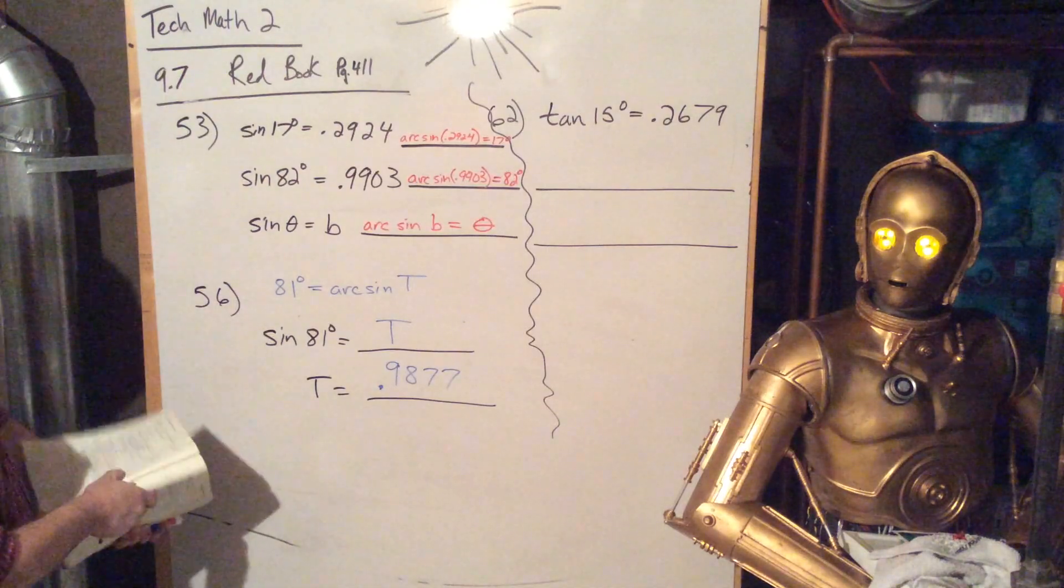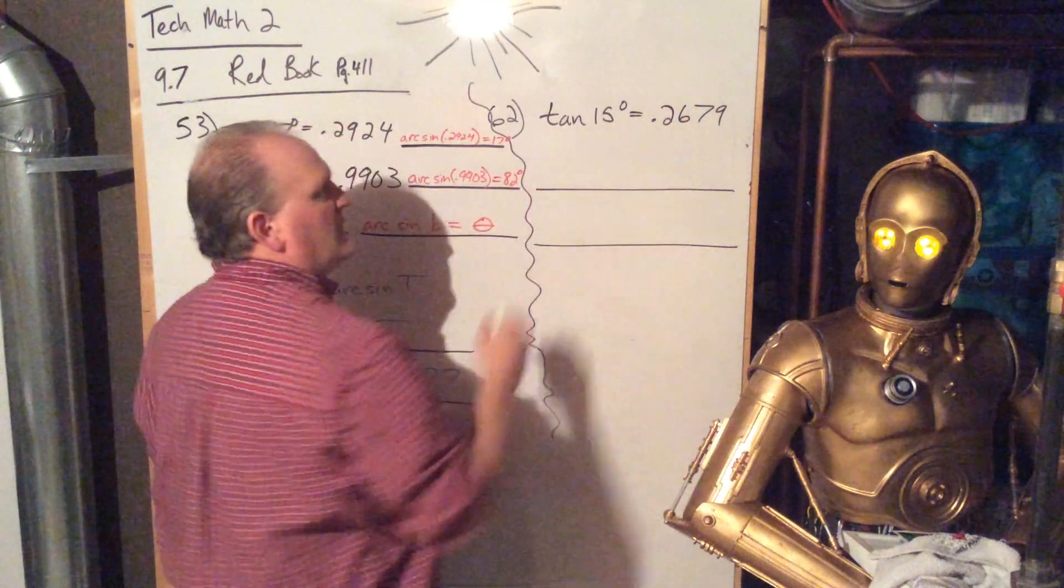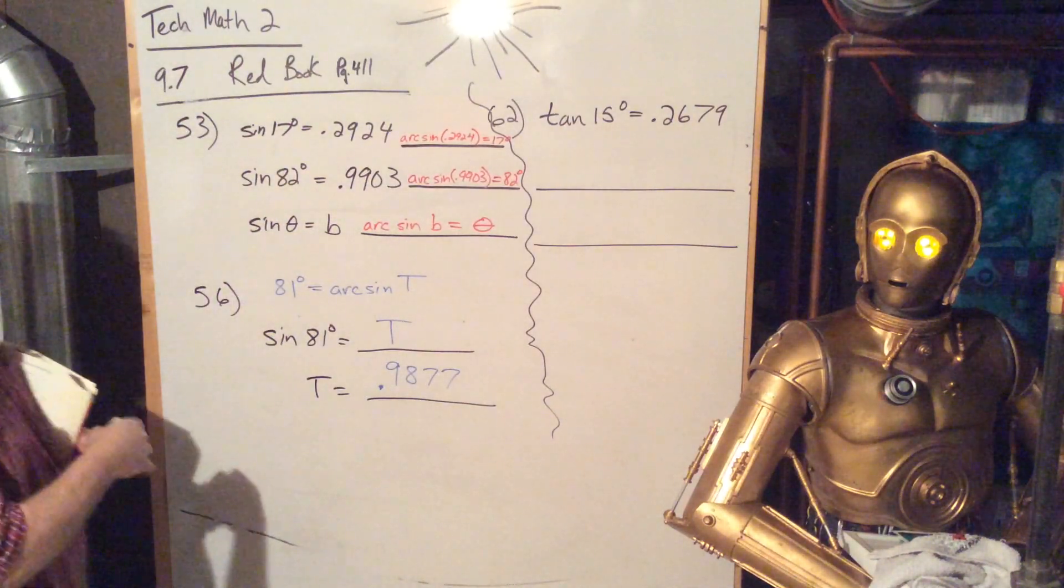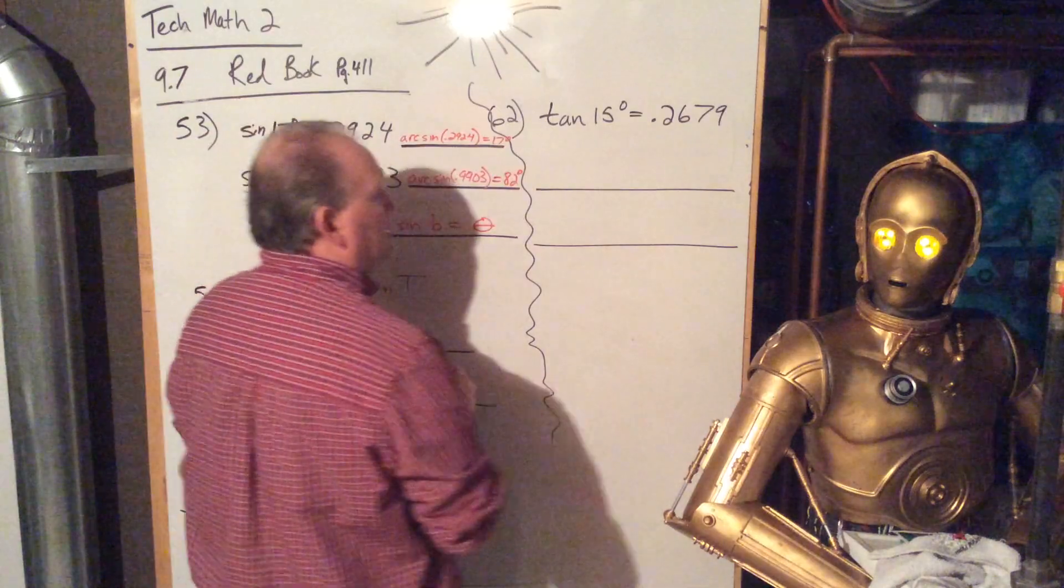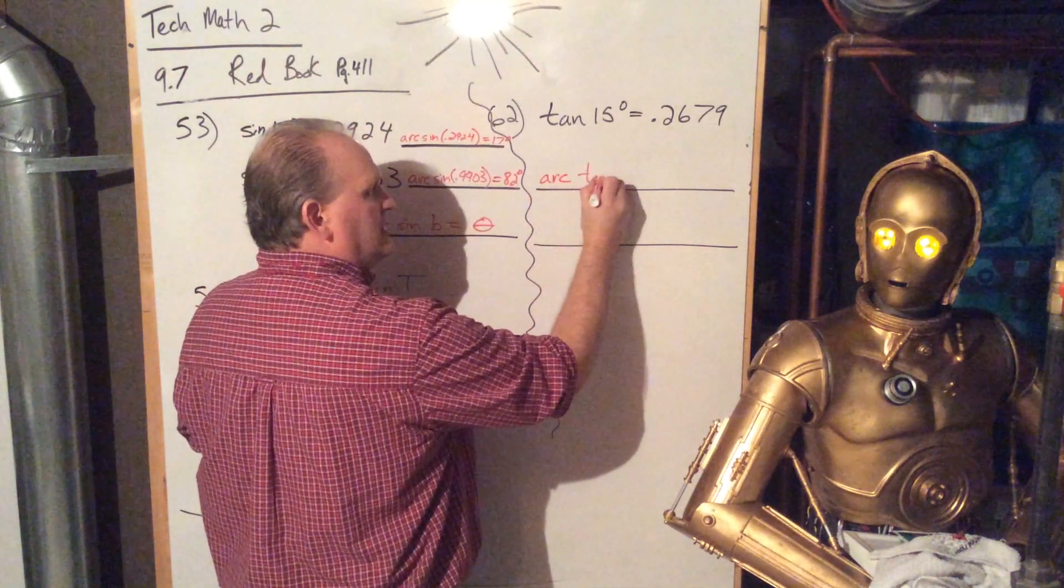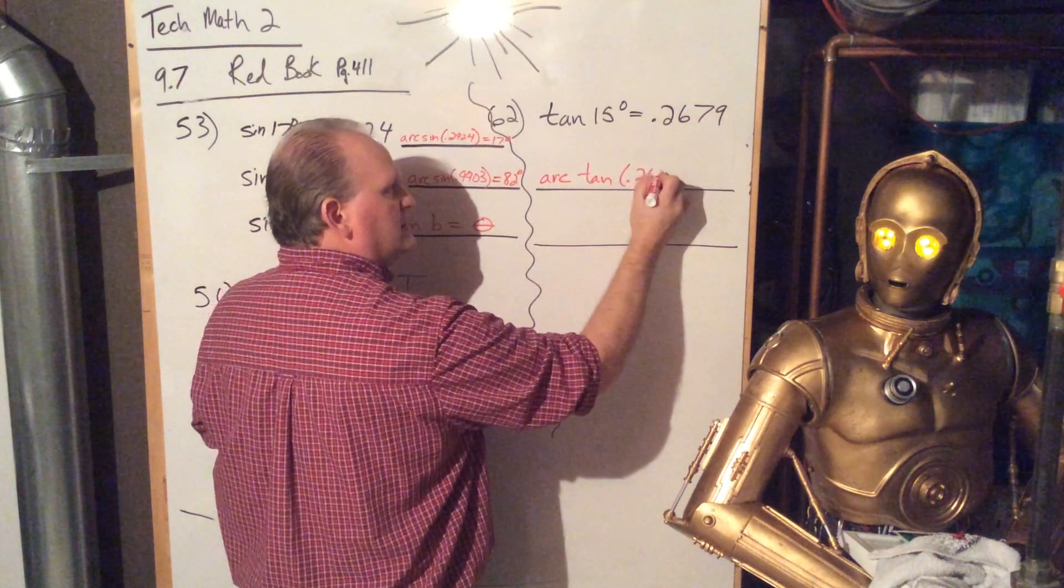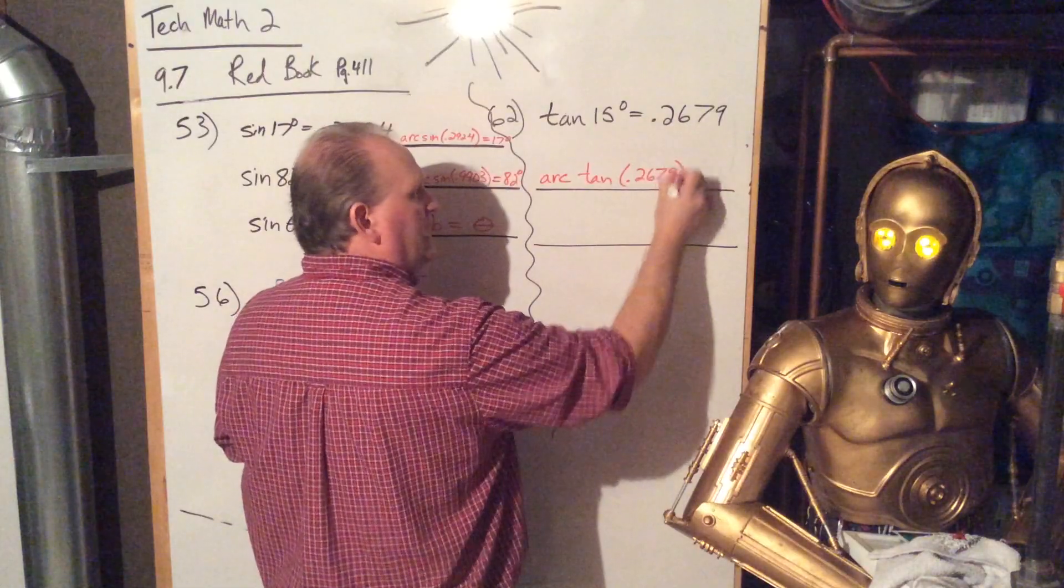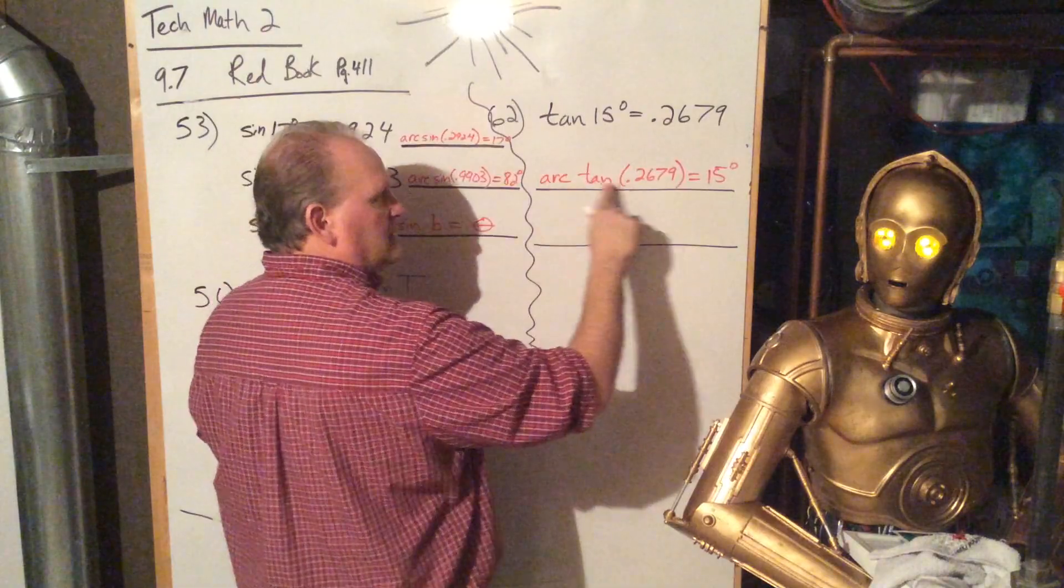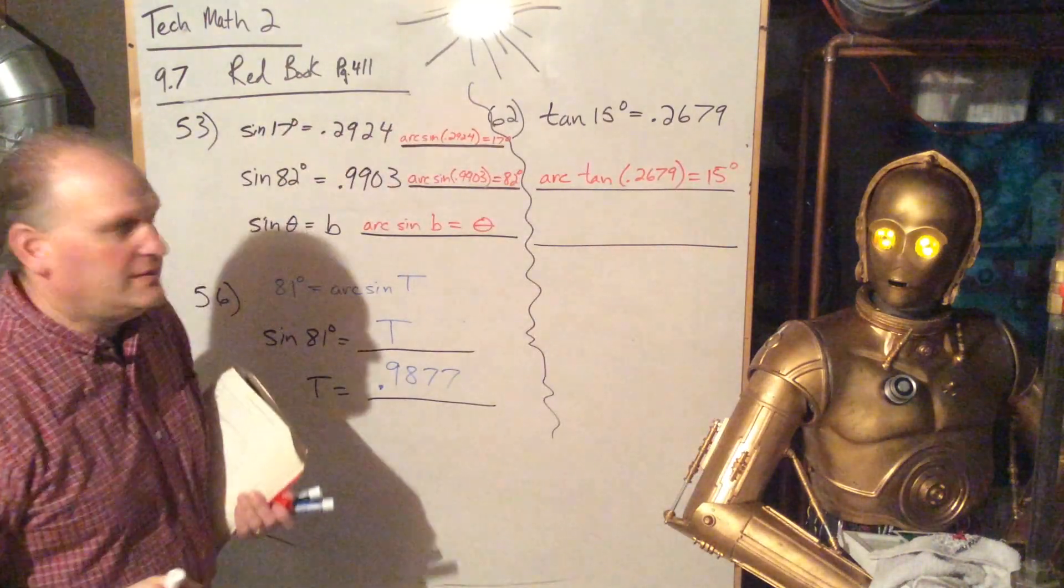All right. This last one, again, they did the tangent of 15 degrees as approximately 0.2679. So they want me to write that as an arc tangent. So we're going to say the arc tangent of that decimal, 0.2679, will equal 15 degrees. So if you put that in your calculator, the arc tan of this, it should kick out 15, or close to it.